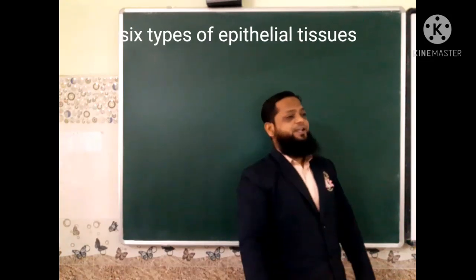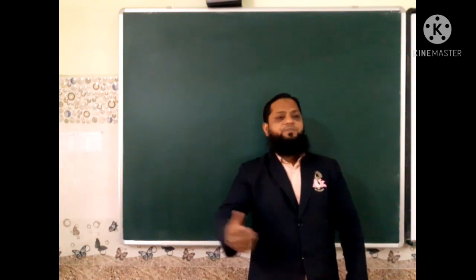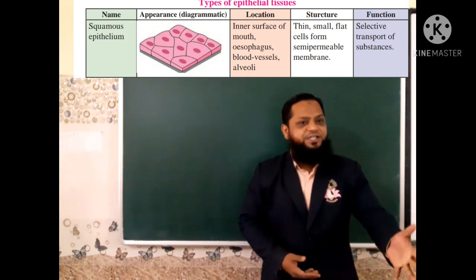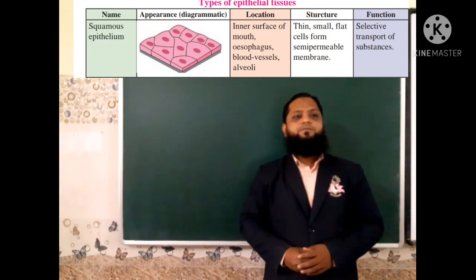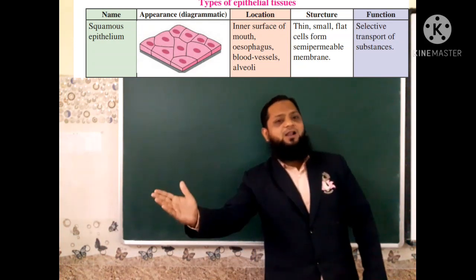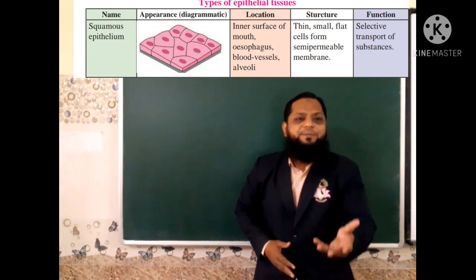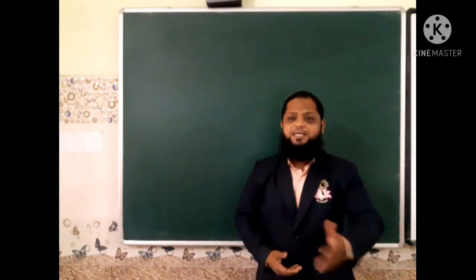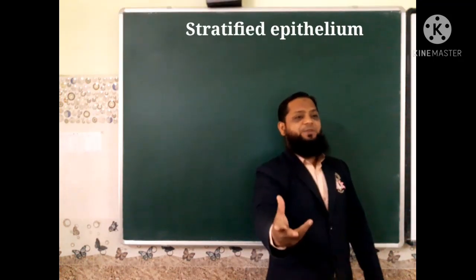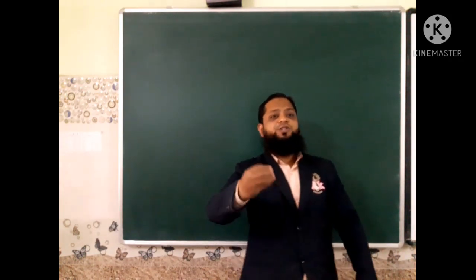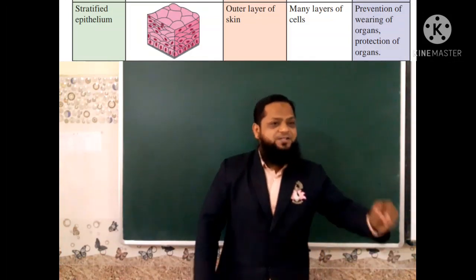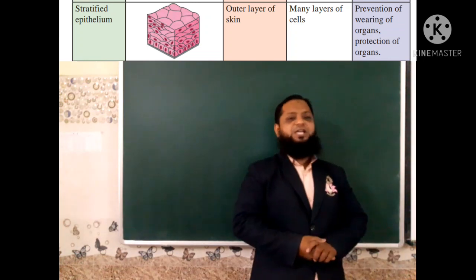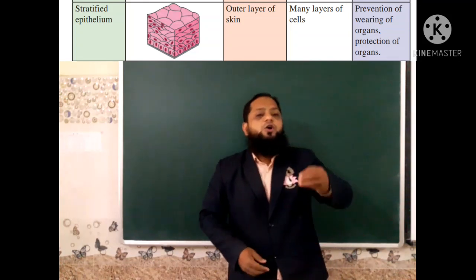Epithelial tissues are further classified into six types. First, squamous epithelium is found in the inner surface of the mouth, esophagus, blood vessels, and alveoli. It consists of thin, flat cells forming a semi-permeable membrane. Its main function is the selective transport of substances. Second, stratified epithelium is found in the outer layer of the skin, consisting of many layers of cells. Its main function is prevention of wearing of organs, or protection of organs.